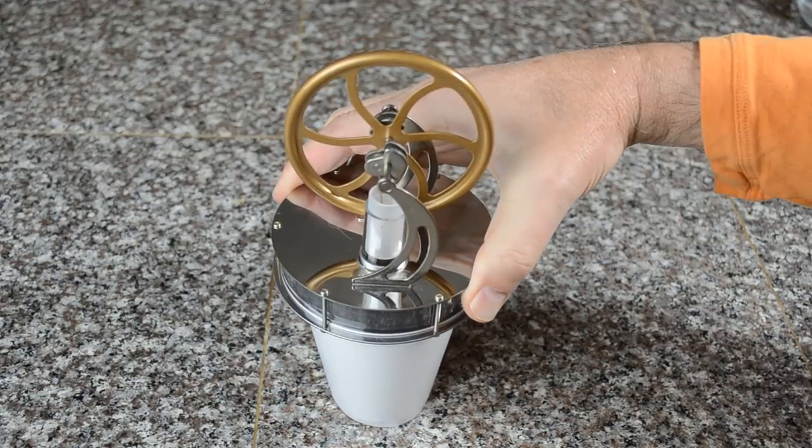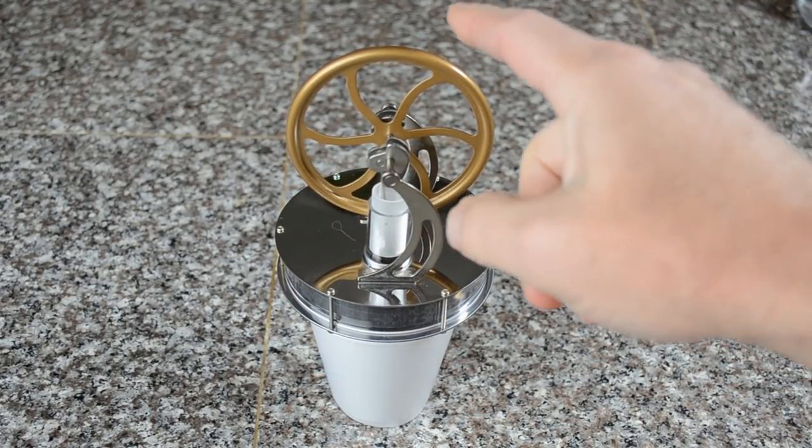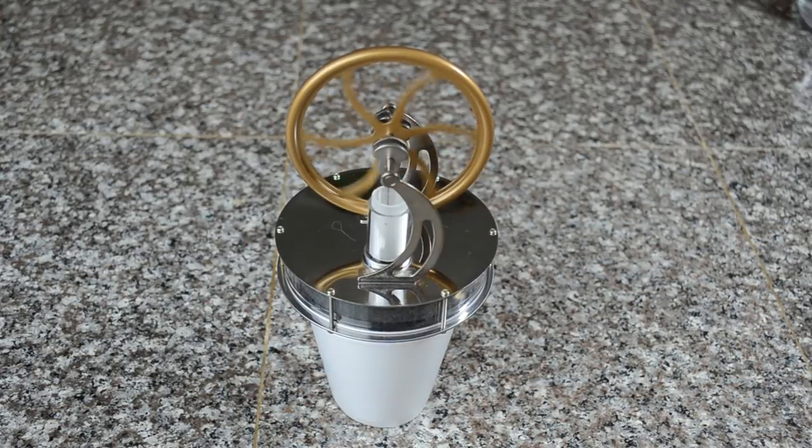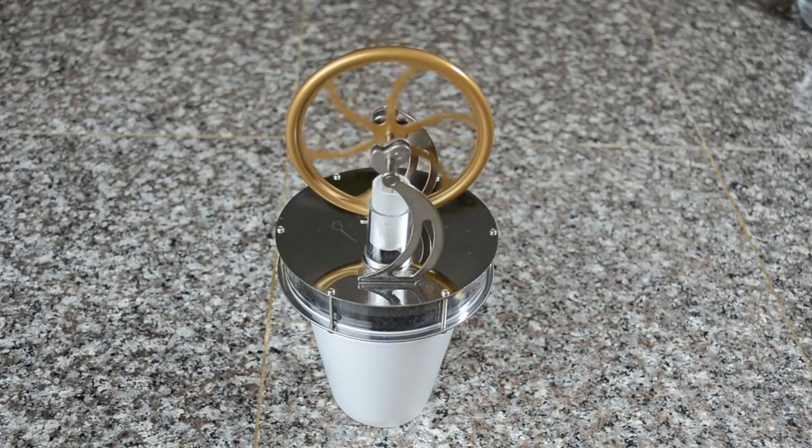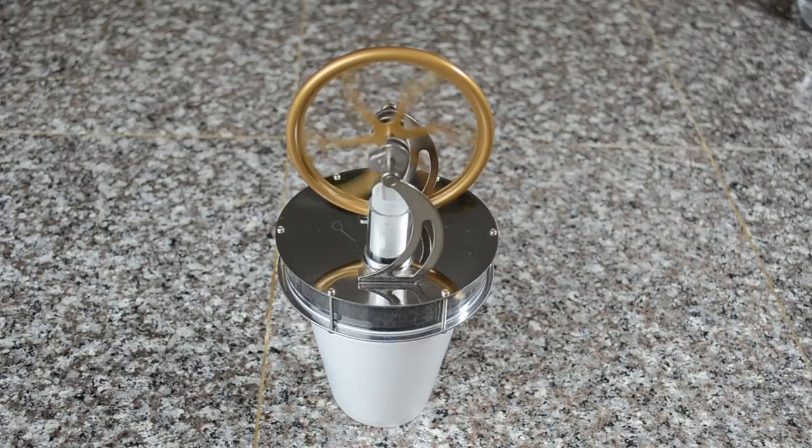Placing one of these toy Stirling engines over a cup of hot water warms the bottom plate. As the flywheel turns, you can see the large gray displacer moving between the hot and cold plates, and the small white piston delivering a net positive amount of energy to the flywheel, causing it to accelerate.